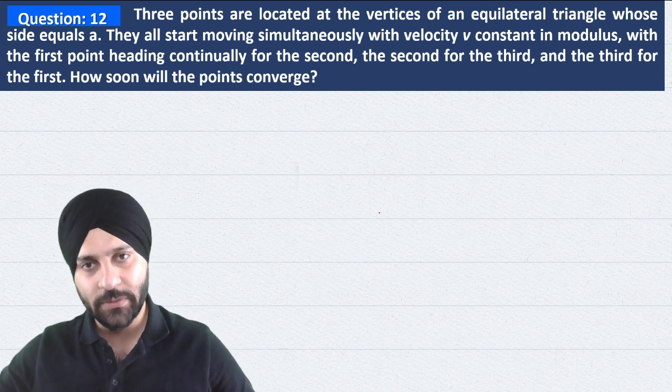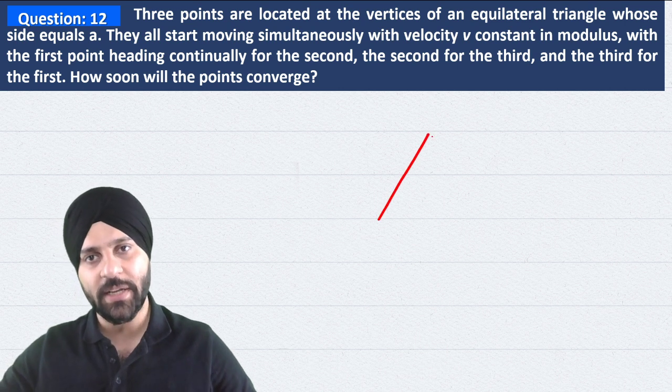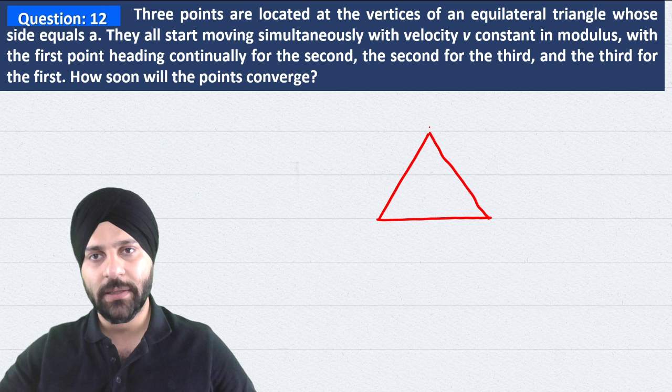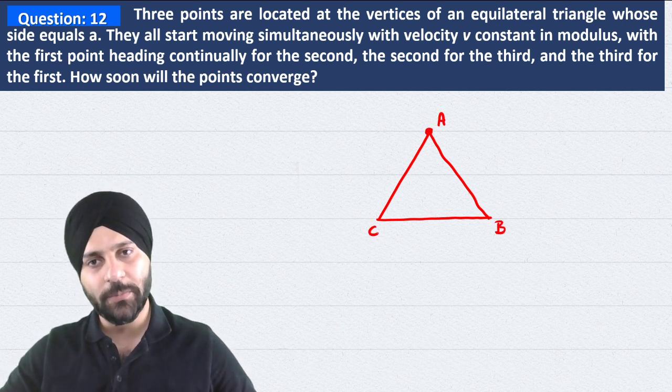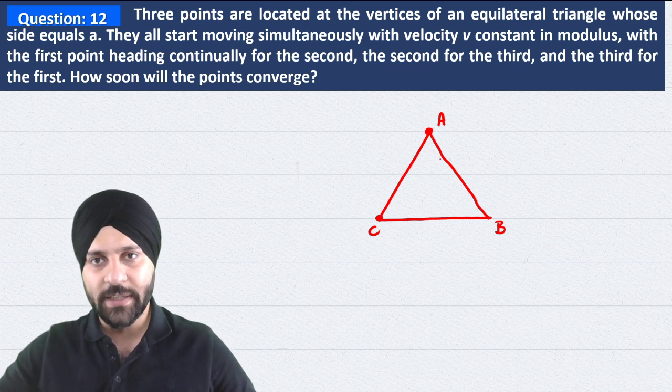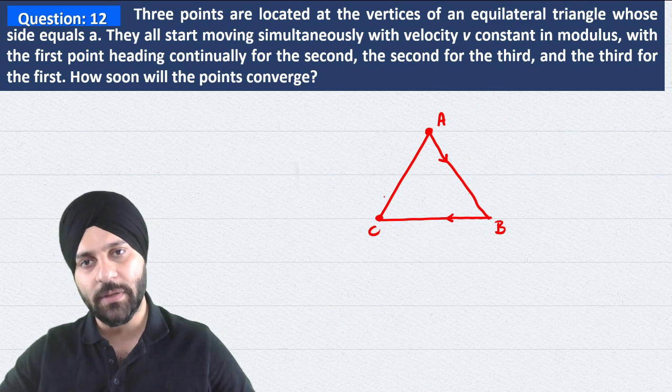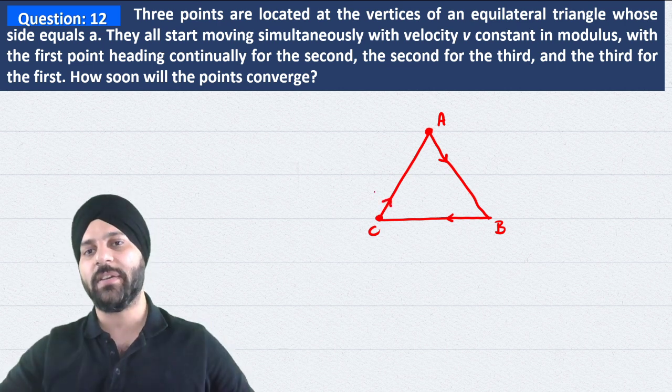So we need to consider an equilateral triangle initially. Let's call this point A, this point B, and this point C. So A's velocity is towards B, B's velocity is towards C, and C's velocity is towards A. These are the initial directions of the velocities.